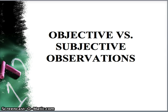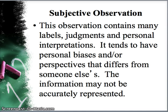These two observations definitely paint different pictures of Donovan and lead to different goals. So what's the difference? The first observation was written subjectively with a lot of judgment and personal bias. The second was written accurately and objectively. A subjective observation is one where we interpret behaviors happening and include personal biases or judgments. The perspective may differ from others', and information may not be accurately represented — as seen when the first observation left out Donovan's counting attempts and the fact that he was cooperatively building and knocking down blocks with another child.